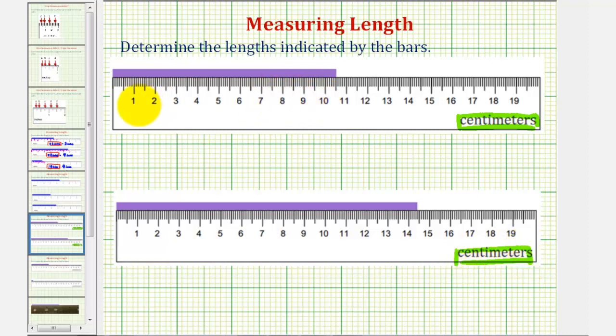Next, notice how each centimeter is partitioned or cut into smaller equal pieces. There are ten tick marks between each centimeter, and therefore each tick mark represents one-tenth of a centimeter. We'll express our lengths both in decimal notation as well as using fractions, just to make the connection. But it's normally common to express a length in centimeters using decimal notation.